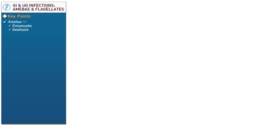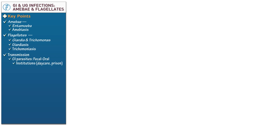To begin, start a table and denote some key points. Of the amoeba, we'll learn about the genus Entamoeba, which causes amoebiasis. We'll also learn about the flagellates Giardia and Trichomonas, which cause gastrointestinal illness and urogenital infection. Note that the gastrointestinal parasites are transmitted via the fecal-oral route. They're especially common in crowded institutionalized settings, such as daycares and prisons, and are often endemic in areas with poor sanitation where water sources are contaminated.